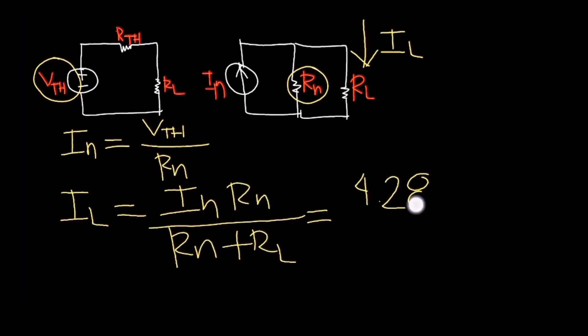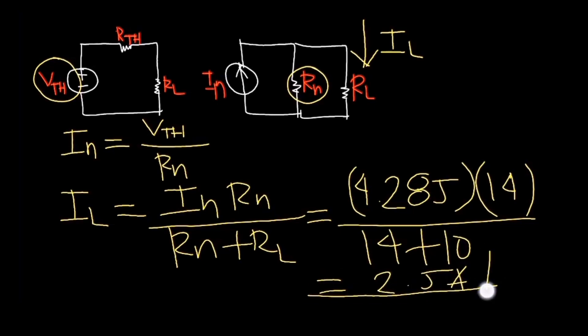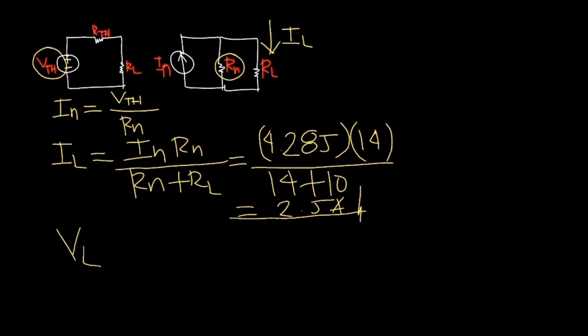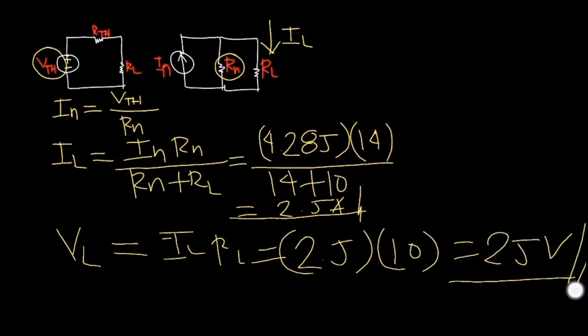Plugging in the numbers, IL equals 4.285 times 14 divided by the sum of 14 ohms and 10 ohms, giving us 2.5 amperes. Therefore, VL is IL times RL, resulting in VL equal to 2.5 times 10, which is 25 volts.